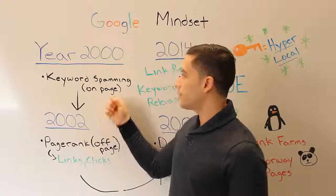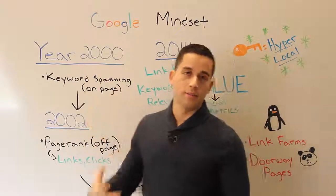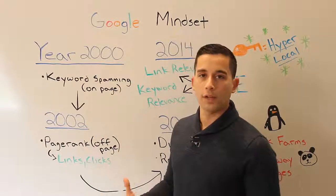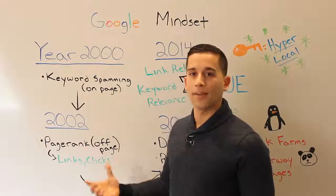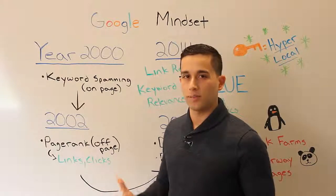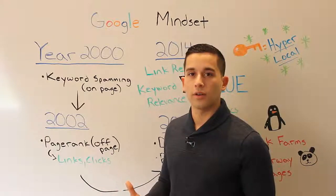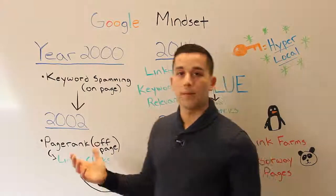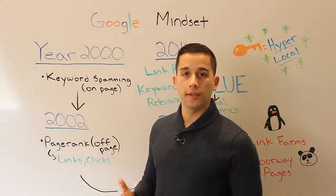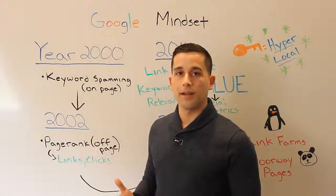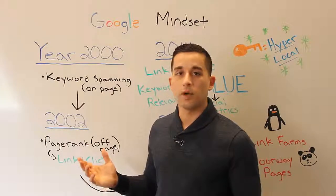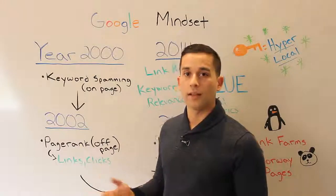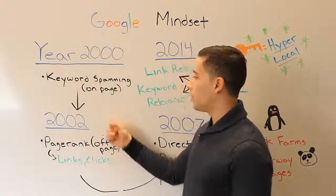Starting around year 2000 and before, if you wanted to rank a site or page well, all you had to do was spam a keyword. If you were trying to rank for 'Calabasas real estate,' you just had to make sure it appeared on your page a hundred times, and it would rank well.